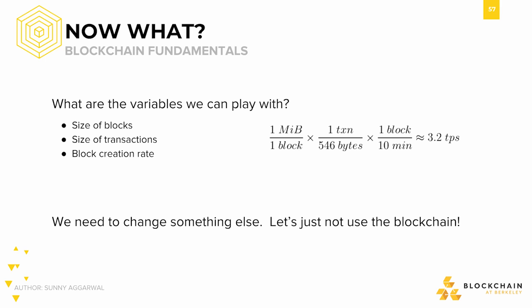We've been playing with a bunch of parameters such as block size, size of transactions, and block rate, but we haven't been able to reach amazing numbers. It's clear that we need to change something else, but we've run out of parameters to play with. The key observation is that all scaling solutions we've seen so far are Layer 1 scaling solutions. So in the next section, we'll look at Layer 2 solutions — let's just not use the blockchain.